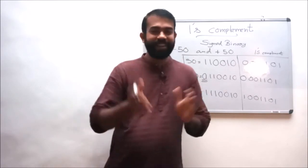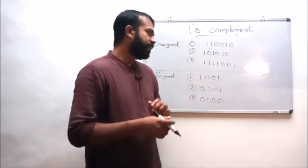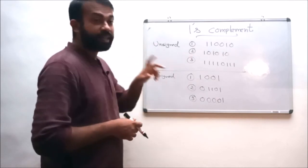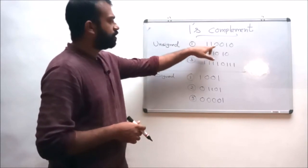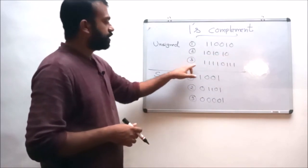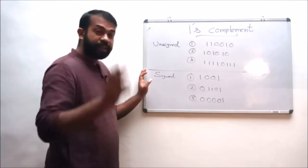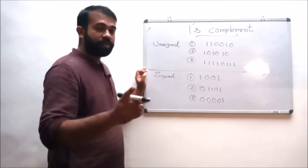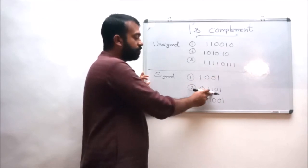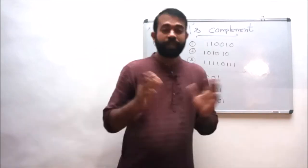Dear students, kindly go through these assignment questions. The first set: convert the unsigned binary number into its one's complement equivalent — (1) 1 1 0 0 1 0, (2) 1 0 1 0 1 0, (3) 1 1 1 1 0 1 1. The second set: convert the signed binary into its one's complement equivalent — (1) 1 0 0 1, (2) 0 1 1 0 1, (3) 0 0 0 0 1.